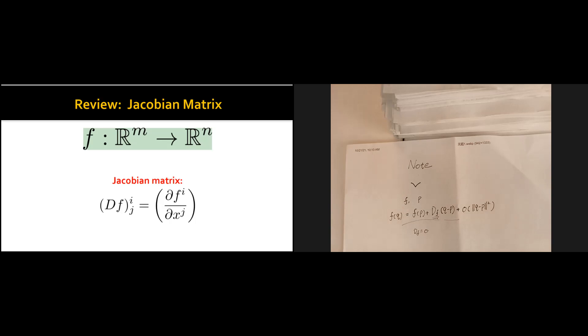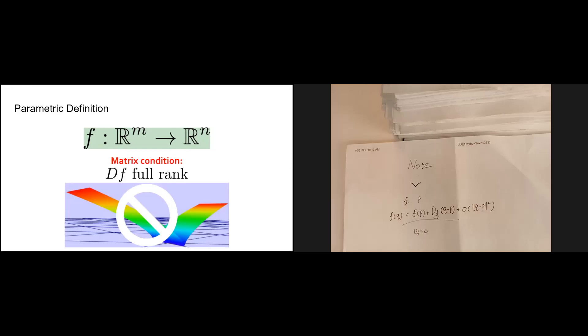To give a more well-defined definition for a surface, we add one requirement in the parametric definition: the Jacobian matrix of the function F should be full rank. That will be the parametric definition of the surface and also the manifold. Do we have any questions so far?